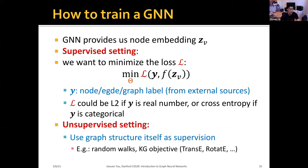The basic approach for the aggregation function is to average information from neighbors and apply a neural network. Mathematically: initialize the layer-0 embedding using input raw node features x_v. For each subsequent layer, average the neighbors' previous-layer embeddings to compute the message, then apply matrix transformations W and B — which are trainable weight matrices of the graph neural network — followed by a non-linearity to increase expressive power. Repeat this for L rounds where L is the total number of layers. Eventually we get the final node embedding for node V computed through L levels of GNN layers.